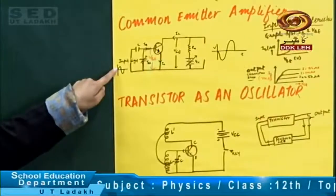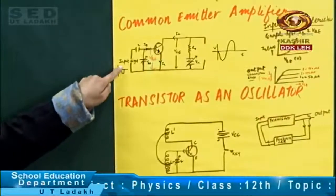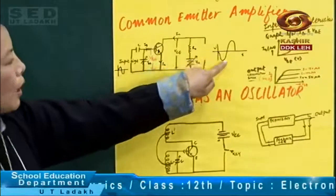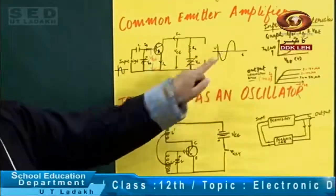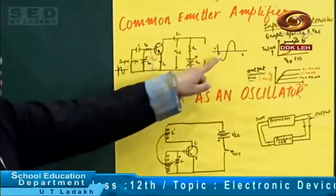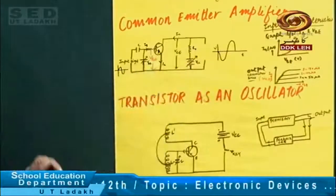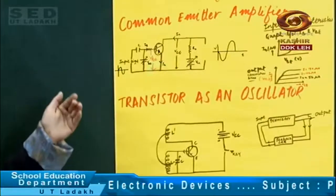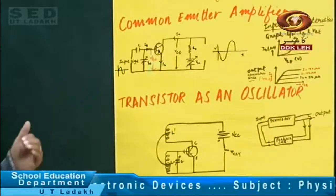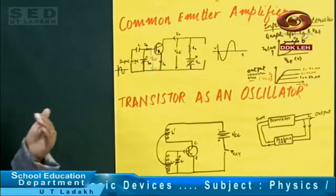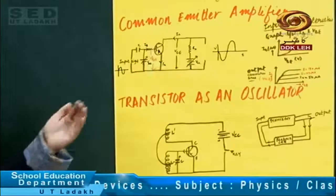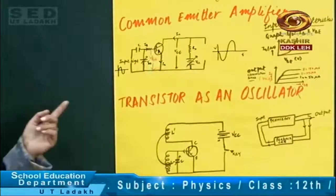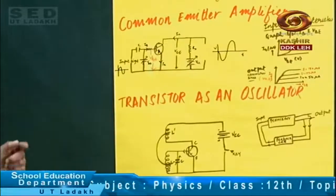In this case, we have the input positive half cycle and the output is the negative half. In this amplifier, the output is 180 degrees out of phase with the input. This is the reason we discussed yesterday.